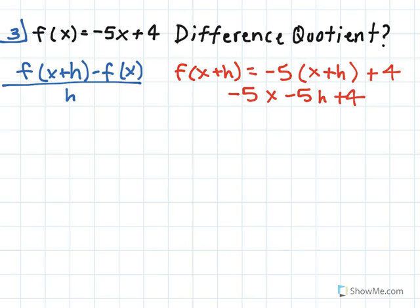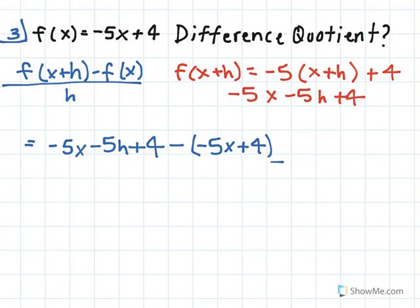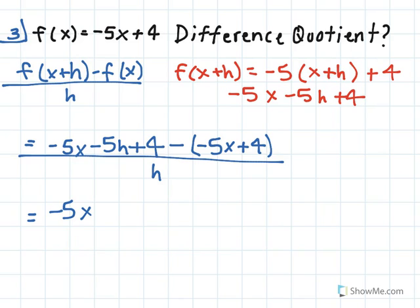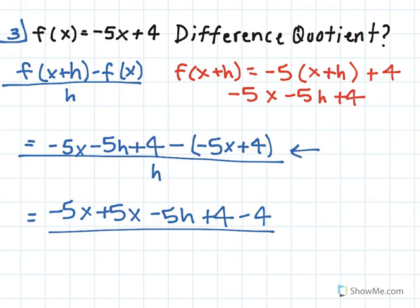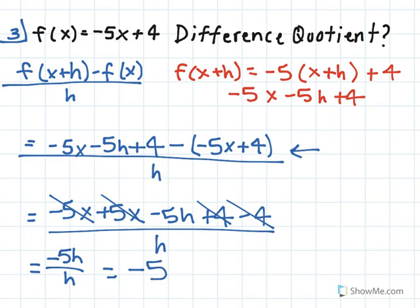Now we can take our value for f of x plus h and plug it back into our difference quotient. So we'll have negative 5x minus 5h plus 4 minus f of x, which is negative 5x plus 4, all over h. Since we are subtracting negative 5x, our x terms cancel and our 4s cancel, and we just have negative 5h over h, which simplifies to our final answer of negative 5.